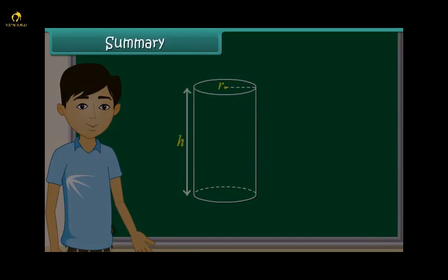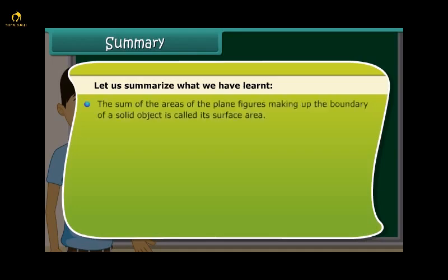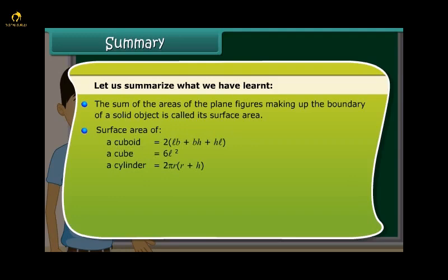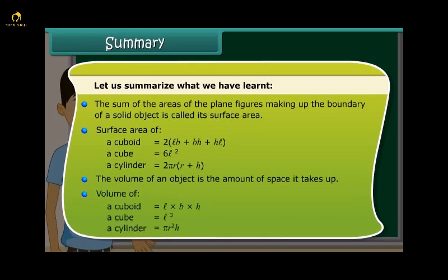Summary. The sum of the areas of the plane figures making up the boundary of a solid is called its surface area. Surface area of a cuboid = 2(LB + BH + HL). Surface area of a cube = 6L². Surface area of a cylinder = 2 pi R (R + H). The volume of an object is the amount of space it takes up. Volume of a cuboid = L × B × H. Volume of a cube = L³. Volume of a cylinder = pi R² H.